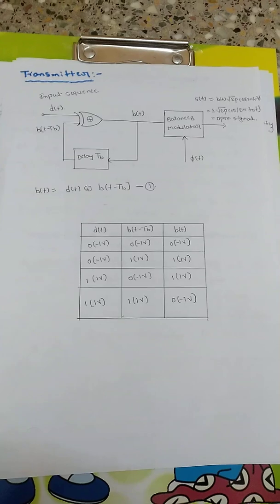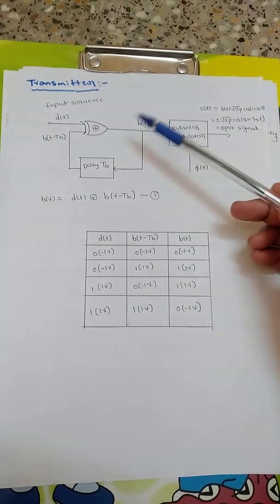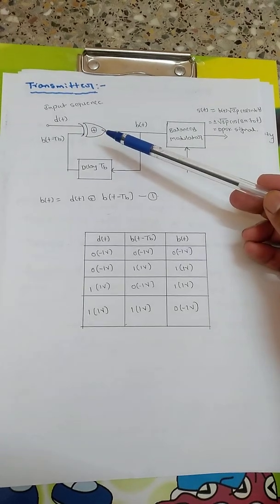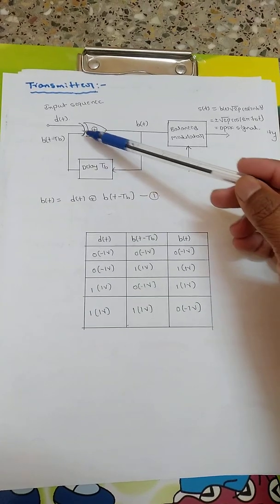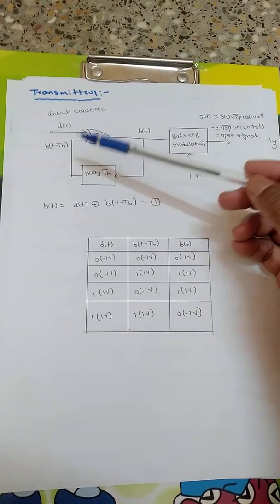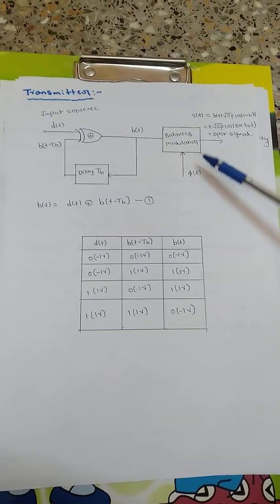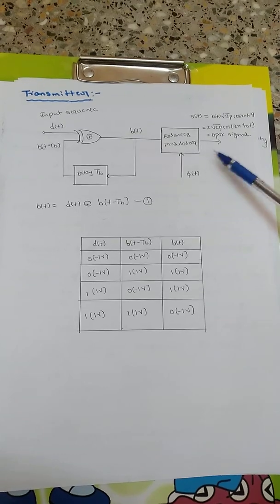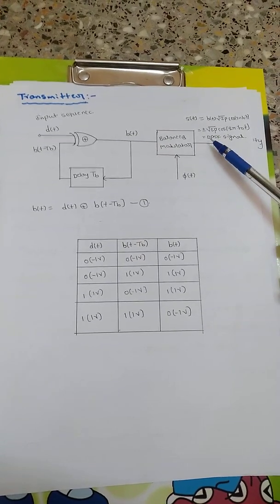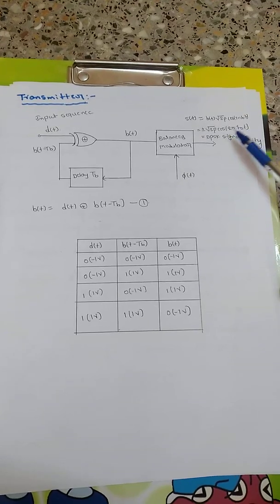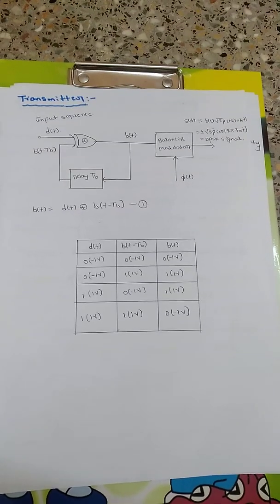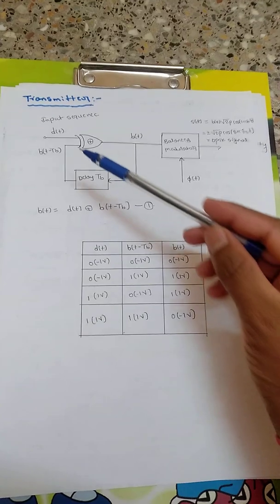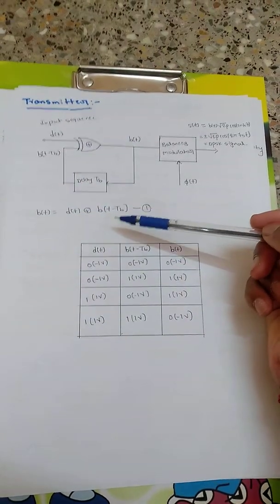The transmitter consists of an input sequence, that is our data, then an XOR gate. A sample is taken and delayed by TB bits and fed back. XORing of D(T) and B(T − TB) gives B(T). Then a balanced modulator adds the carrier and we get the DPSK signal: square root of 2P · cos(2π F₀ T), where square root of 2P is the DC level of the signal.